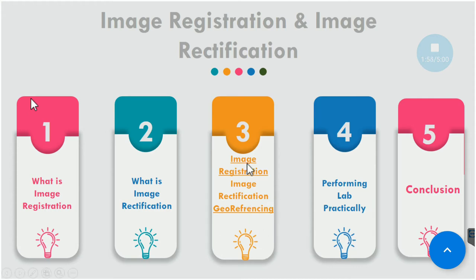So the difference between the three: image registration is image-to-image alignment, image rectification is image-to-map or image-to-shapefile or image-to-vector alignment, and georeferencing is simply aligning a map by assigning ground coordinates using GPS. Now in the next section we will perform this lab practically.